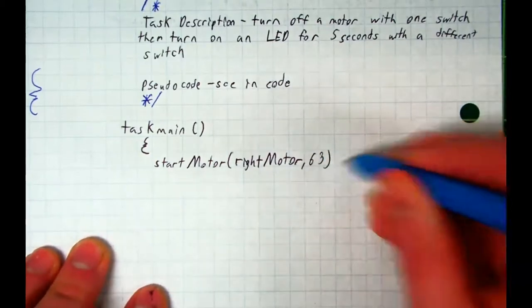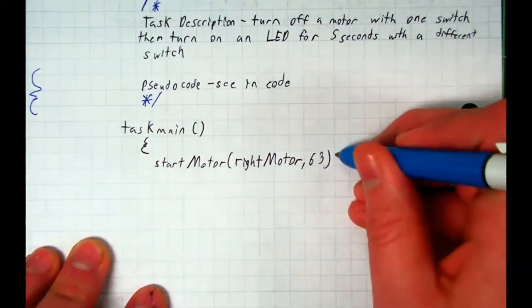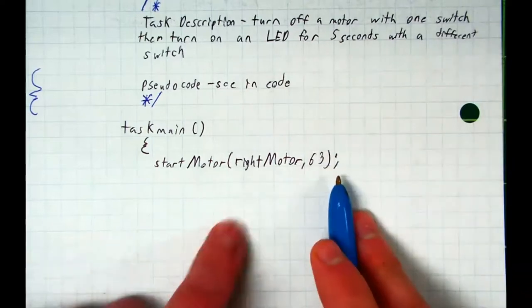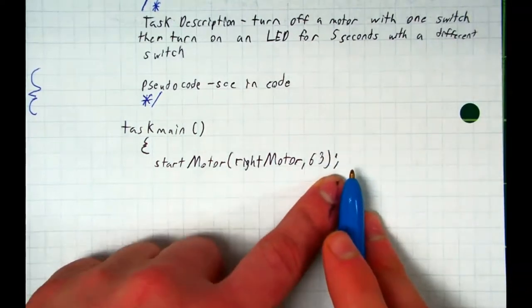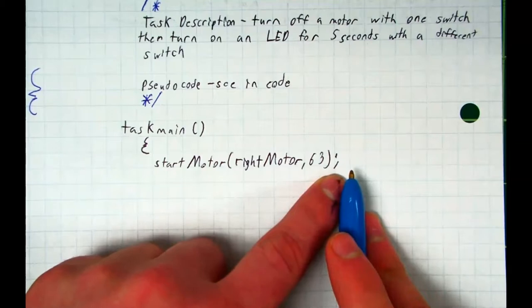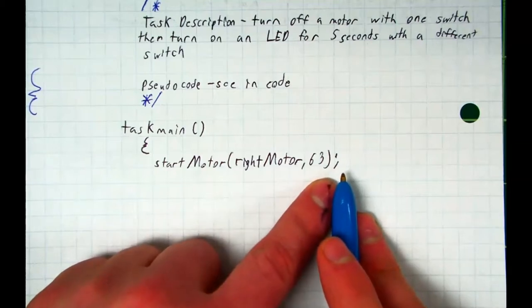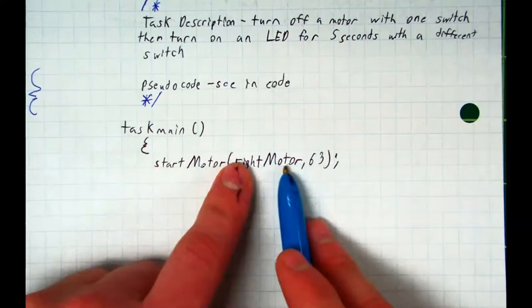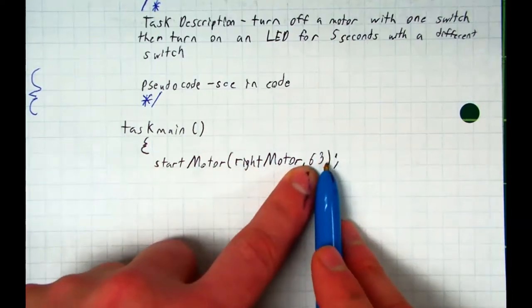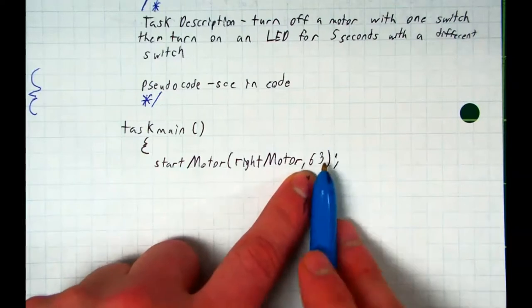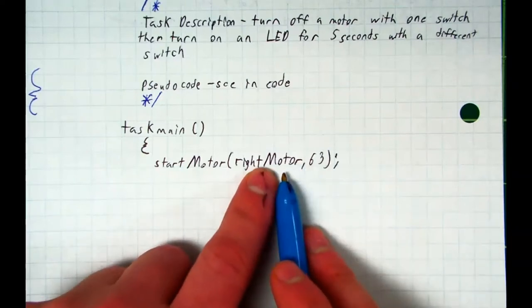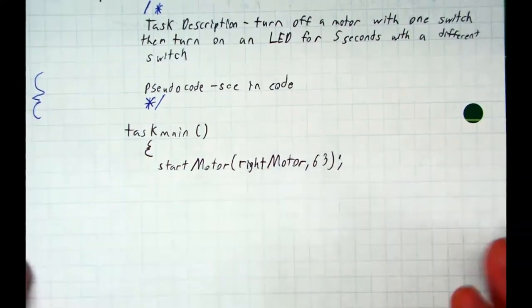I'm going to close my parentheses and write a semicolon. The semicolon tells me it's the end of the line, the end of the single command. So what this says is turn on a motor, which motor? The right motor. At what speed? 63. And that's how you'd write it. If you want it to go faster you type in a bigger number. If you want it to be a different motor you type in a different motor.